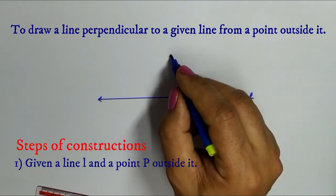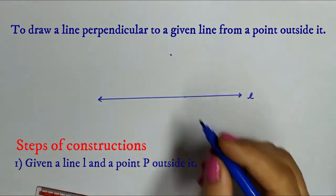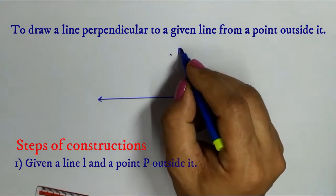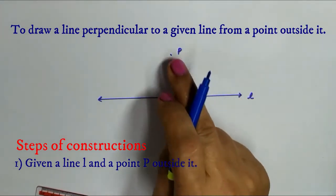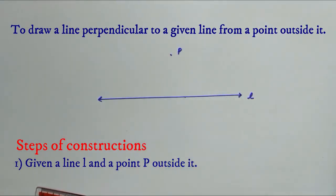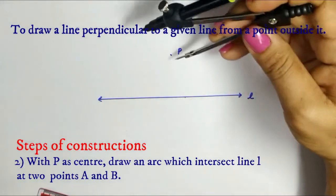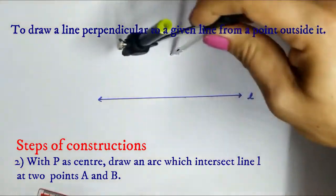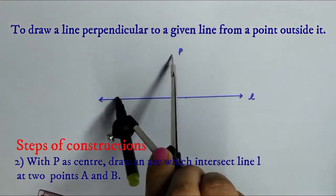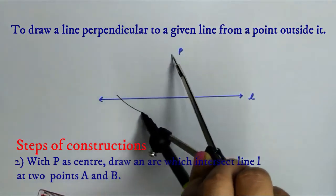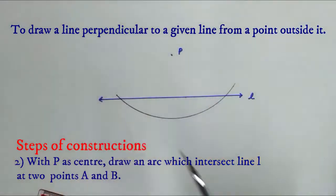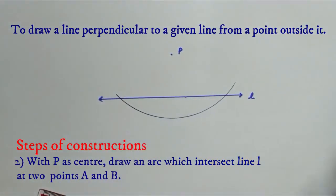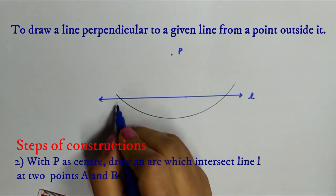Take point P which is outside line L. With P as center, draw an arc which intersects the line L at two points A and B.